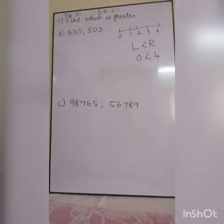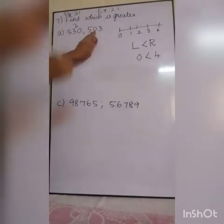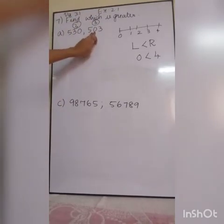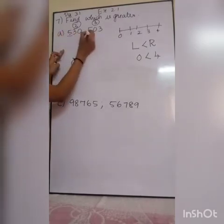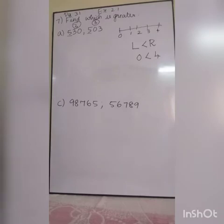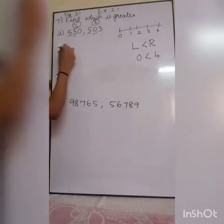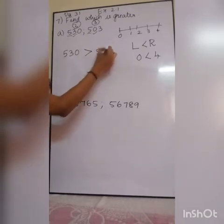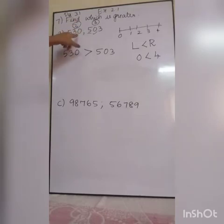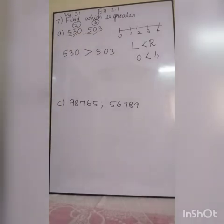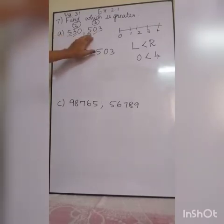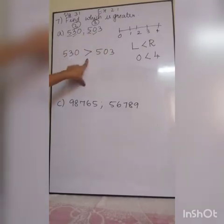Now, how will we do the comparison? First I will count the number of digits. Here how many digits are there? 3. Here also 3. So we can't compare by the number of digits. So what we will do? We will start from the left side. First number: 5, 5 — both are the same, so we can't compare. Next: 3 versus 0. 3 is greater, so obviously 530 will be greater than 503.